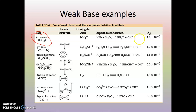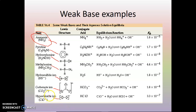Looking at the table, you have different forms of bases: ammonia, pyridine, hydroxylamine, methylamine, hydrogen sulfide, carbonate, and hypochlorite. Hypochlorite is an important one because this is bleach. Bleach is a base, but it is a very weak base — notice that its Kb value is very similar to, and slightly higher than, the Kw value for water.